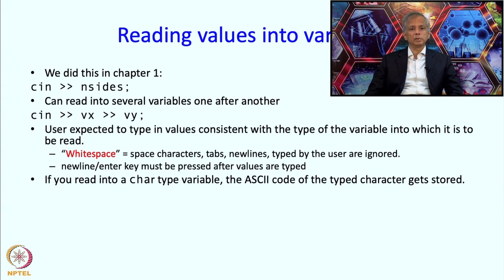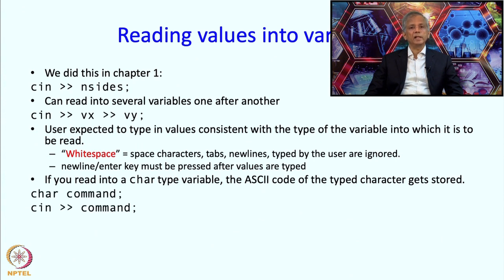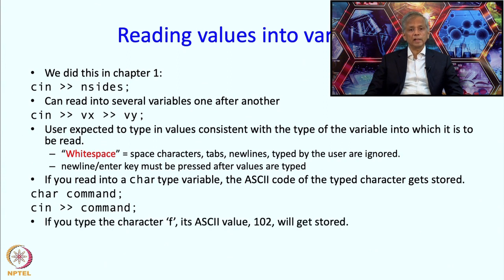When reading values into a char type variable, it is acceptable to type a character. What goes into the variable is the ASCII value of that character. So if you define 'char command' and execute 'cin >> command', C++ will wait for the user to type a character — white space will be ignored, but any non-whitespace character typed will have its ASCII value stored in the variable. For example, if you type 'f', its ASCII value 102 will get stored.